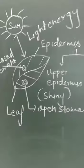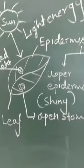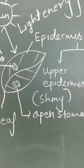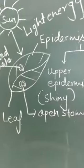In the shiny surface there are less number of stomata, but in the rough surface, that is the lower epidermis, there are many stomata present.